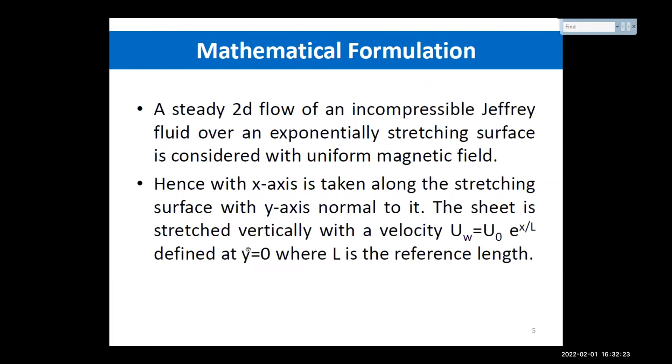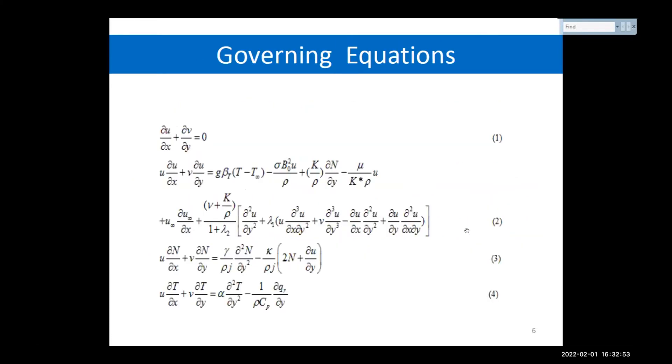Coming to the mathematical formulation of the problem, a steady two-dimensional flow of an incompressible Jeffrey fluid over an exponentially stretching surface is considered with a uniform magnetic field. The X-axis has been taken along the stretching surface with Y-axis normal to it, and the sheet stretched vertically with the velocity UW equals to X to the power L where L is the reference length. The flow and heat transfer characteristics under the boundary layer and Boussinesq approximations with the radiation effects are governed by the equation of continuity, momentum, micro rotation, and temperature.